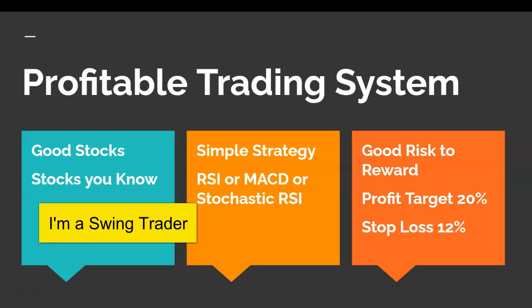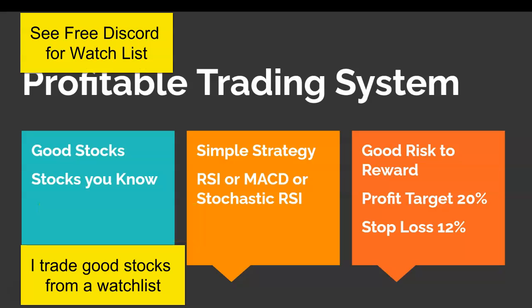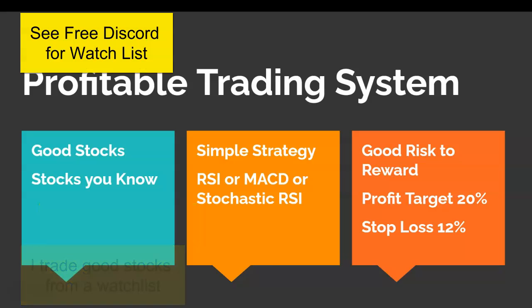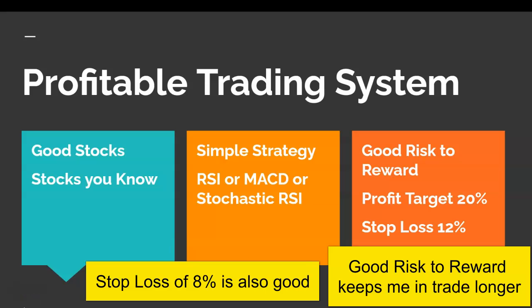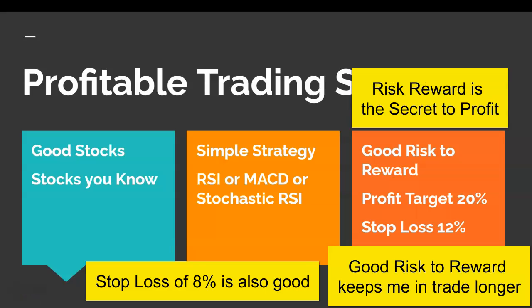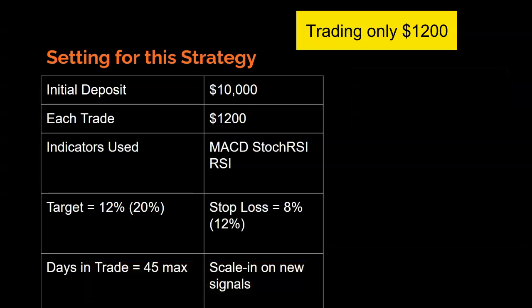I trade from a watch list of stocks. I have a simple strategy: the RSI, the MACD, and the Stochastic RSI strategy, and I use good risk/reward. Currently I'm using an 8% stop loss and a 20% profit target. This kind of risk/reward keeps me in trades longer, but my win rate goes down a bit.